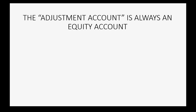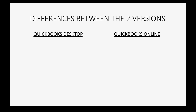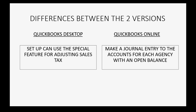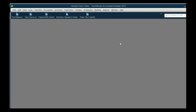The adjustment account that we use to adjust sales tax is always an owner's equity account, because equity accounts are what balance adjustments when we do a transition from one system to another. With QuickBooks Desktop, the setup can use special features for adjusting sales tax. But with QuickBooks Online, when we set up sales tax for transferring over to a new account, we make a journal entry to account for the opening balances for each of these tax agencies.